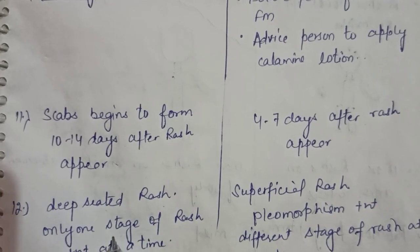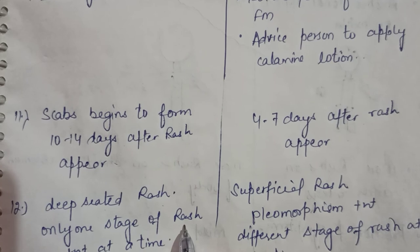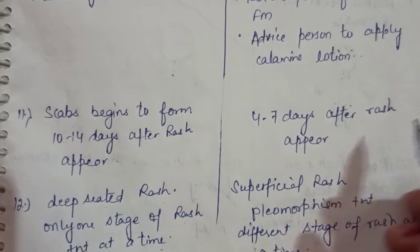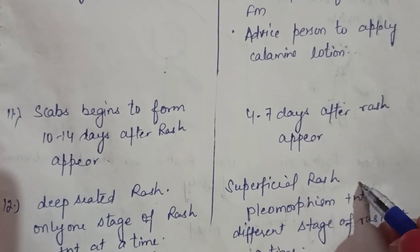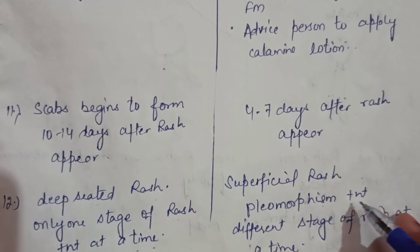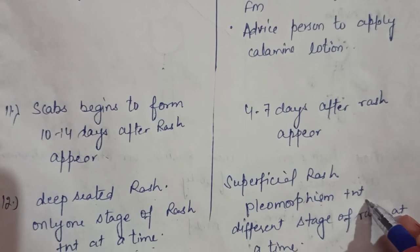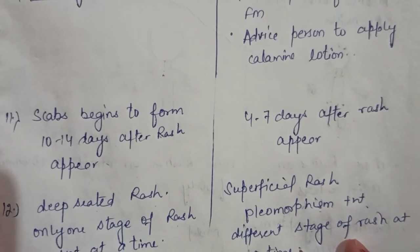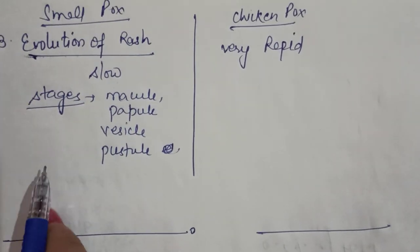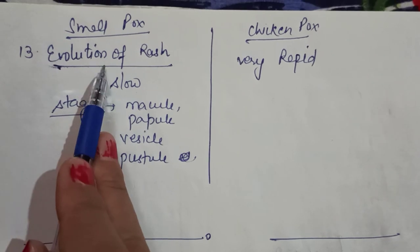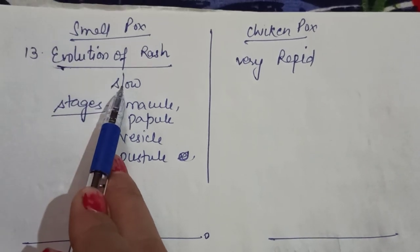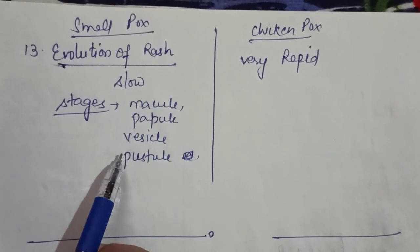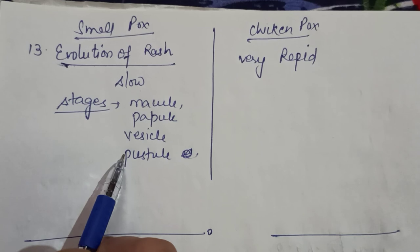We can prevent chickenpox with the varicella vaccine. In smallpox, one stage of rash is present at a time, whereas in chickenpox pleomorphism is present with different stages of rash present at a time. The evolution of rash in chickenpox is very rapid compared to smallpox.